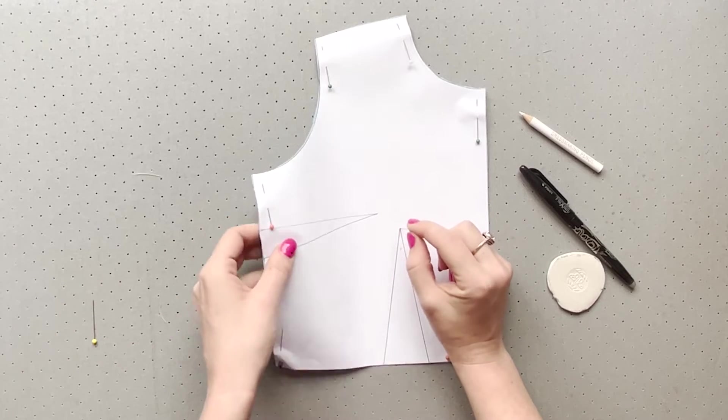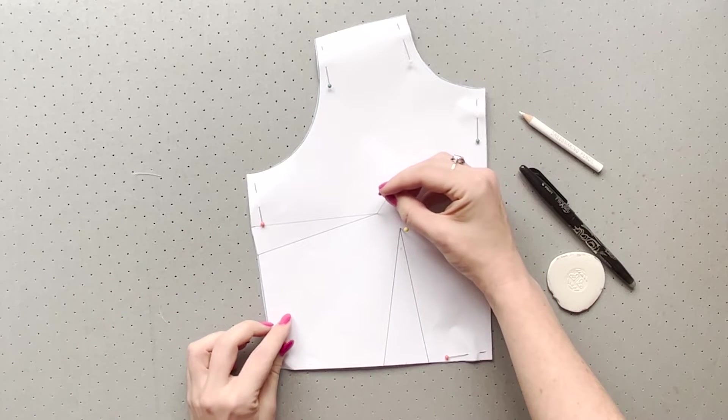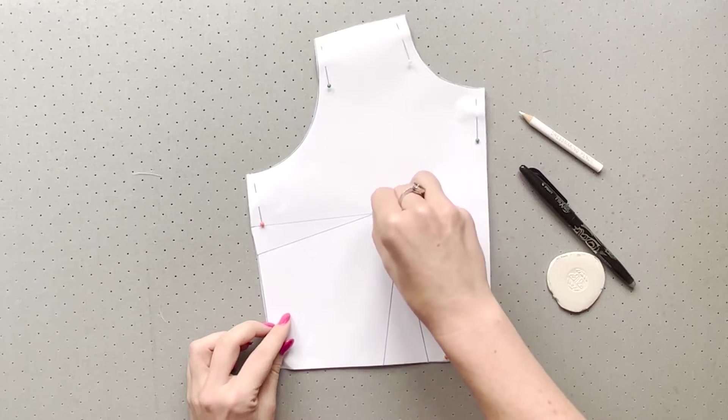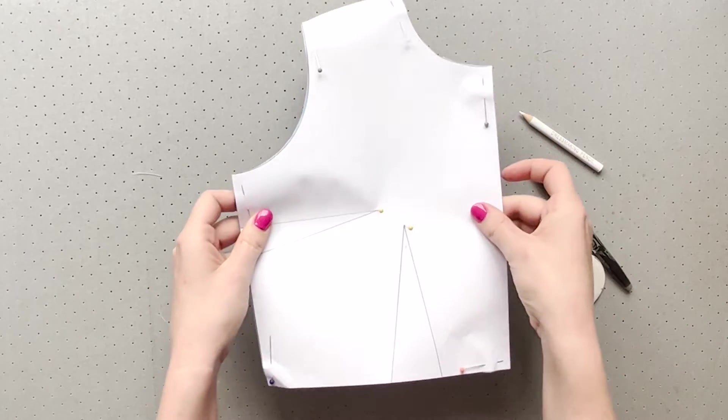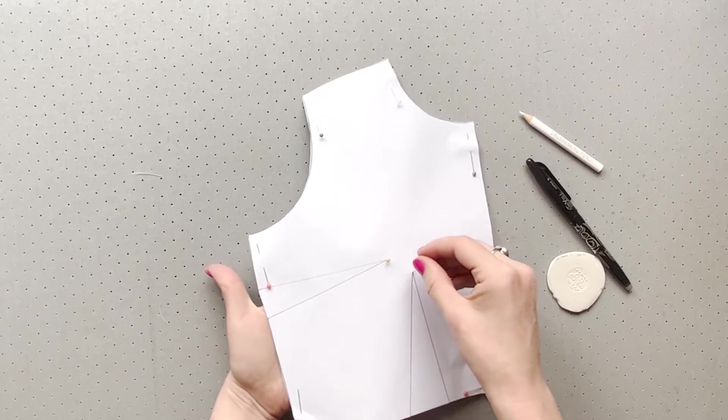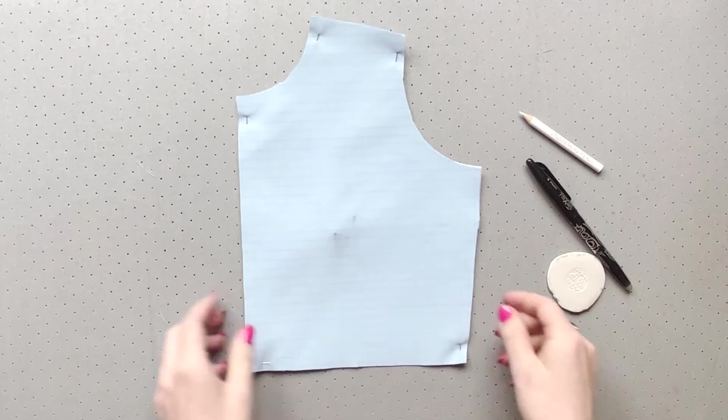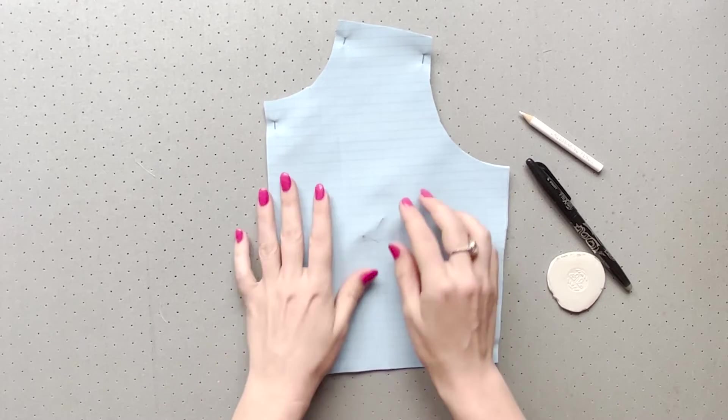Notches marked, take a pin and push it through the point of your dart. Go directly downwards and push it all the way till the head touches the fabric. Make sure you don't stab your fingers on the reverse side. Keeping this secure with your finger, flip your fabric fully over.